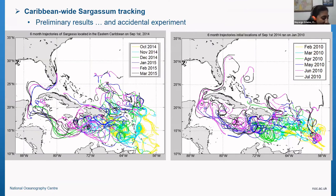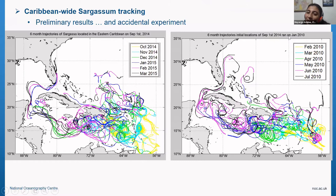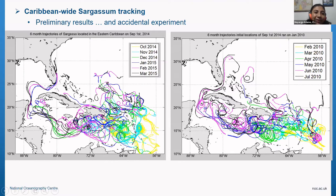Then I have this somewhat accidental experiment — I was interested in the 2014 date because it was leading to the strong sargassum year in 2015, but I didn't yet have the 2014 velocity fields. So I ran it as a test using the January 2010 velocity field instead. You can see that after six to seven months, some tracks come close to the Belize and Mexican coast, but not quite close enough to beach at Cozumel.